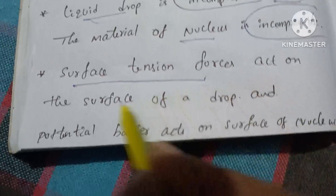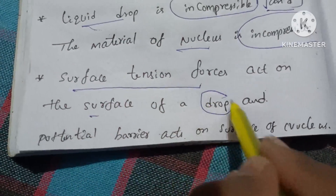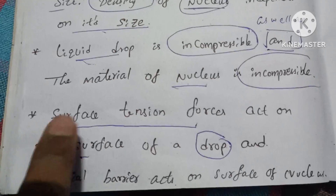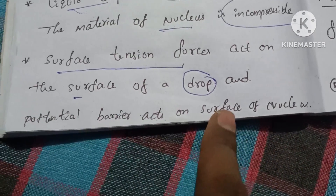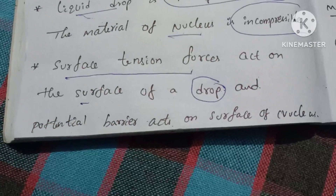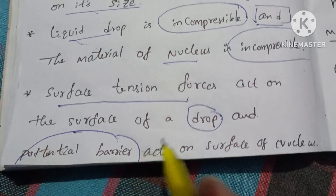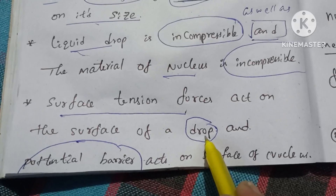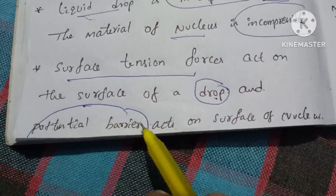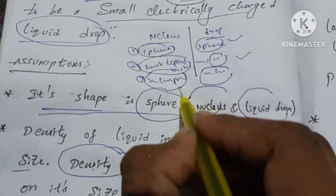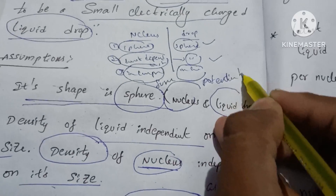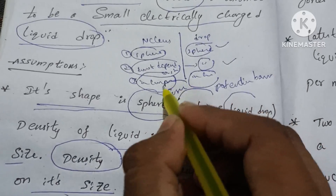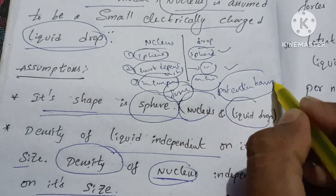Surface tension forces act on the surface of the liquid drop. Similarly, in the nucleus there is a potential barrier at the surface. So: liquid drop has surface tension, and the nucleus has a potential barrier. These are two points of similarity.